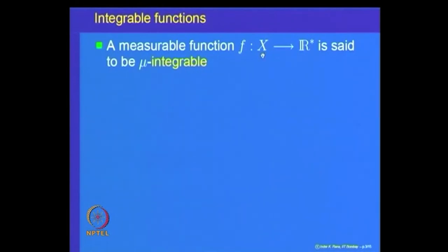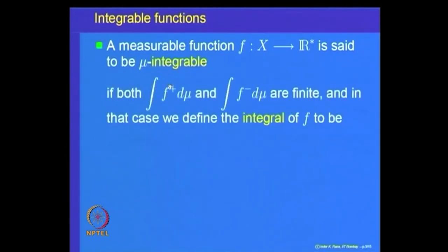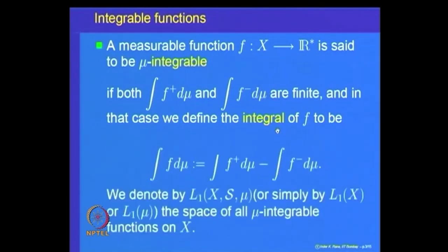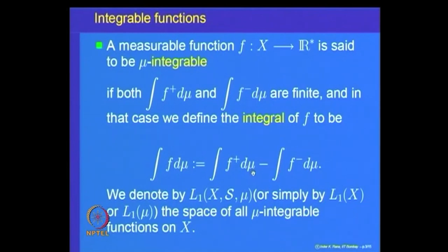If you recall, we said a measurable function f on X, an extended real-valued measurable function f, is said to be integrable with respect to μ — written as μ-integrable — if both the integral of the positive part and the negative part of the function are finite. So f is μ-integrable if ∫f⁺dμ and ∫f⁻dμ are both finite numbers. In that case, the integral of f is defined as ∫f⁺dμ minus ∫f⁻dμ.